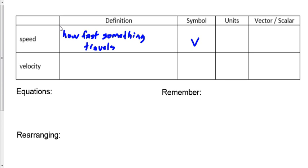The units for speed could be kilometers per hour, centimeters per second, or millimeters per hour if you're like a snail. But the standard units for speed — if in doubt — are meters per second. If we had meters for distance and displacement, and seconds for time, then speed is meters per second. Meters per second always works.